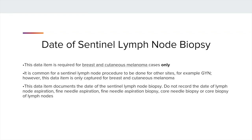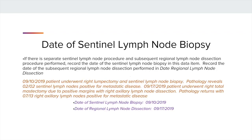Date of Sentinel Lymph Node Biopsy. This date is required for breast and melanoma only. It is common for Sentinel Lymph Node Biopsies to be performed for other primary sites, but only breast and melanoma are required at this time. The data item documents the date of the Sentinel Lymph Node Biopsy. Do not record the date of an FNA or a biopsy of a lymph node in this data item. If there is a separate lymph node biopsy followed by a subsequent separate Regional Lymph Node Dissection, record the date of the Sentinel Lymph Node Biopsy in this data item.